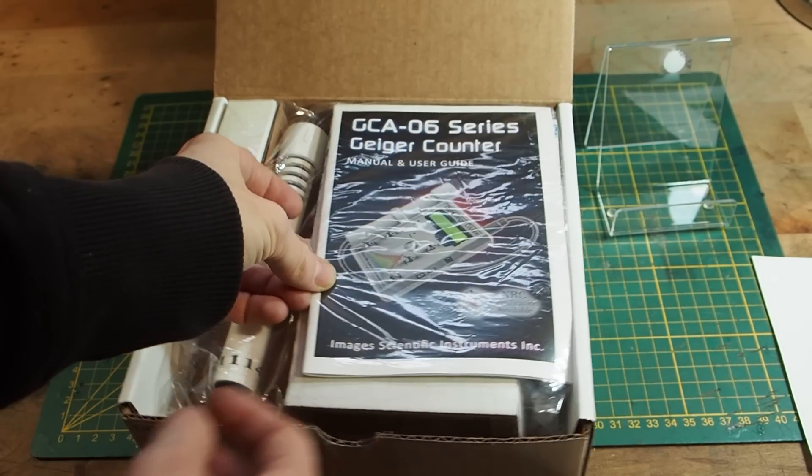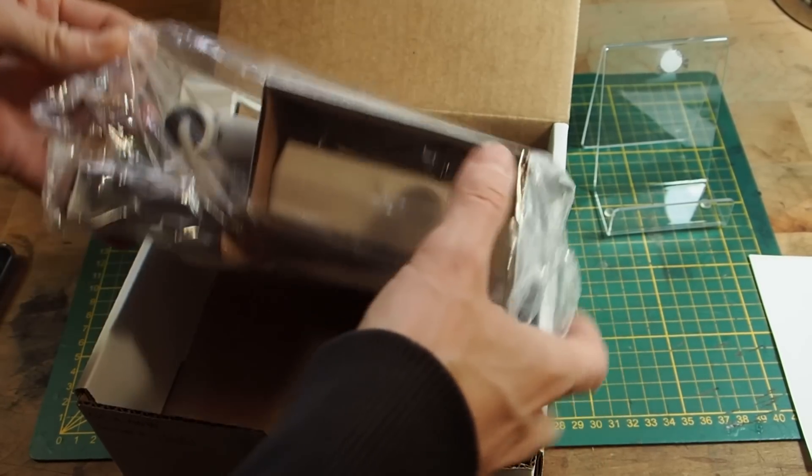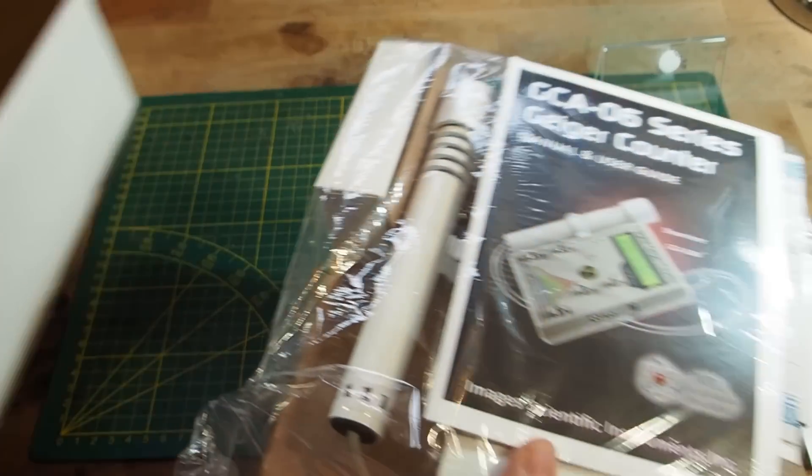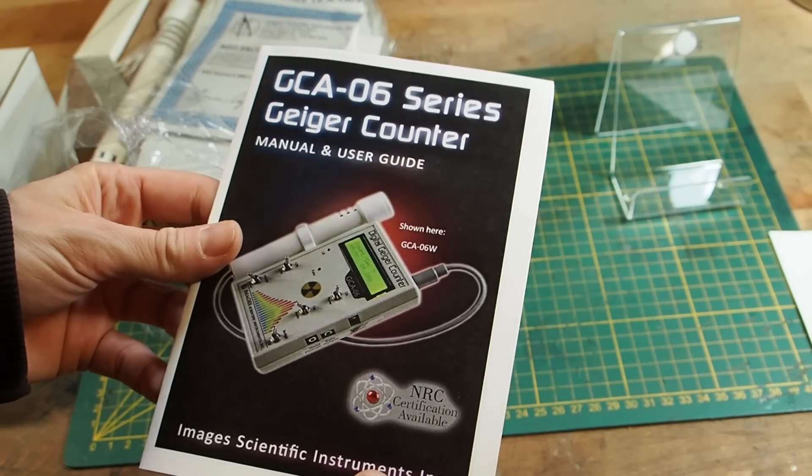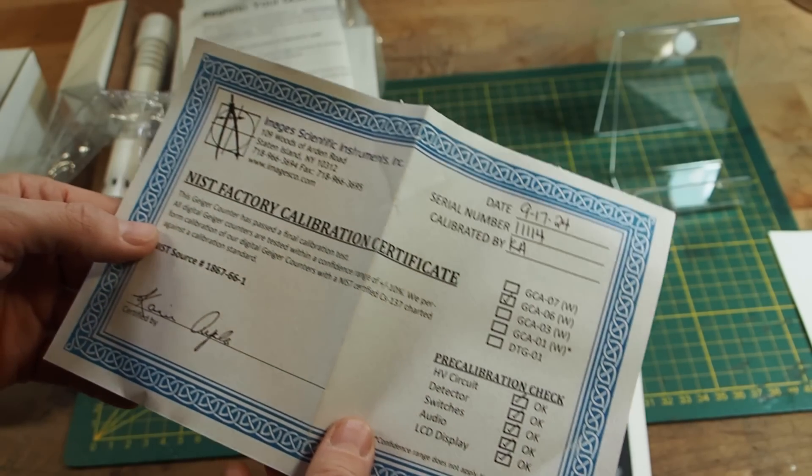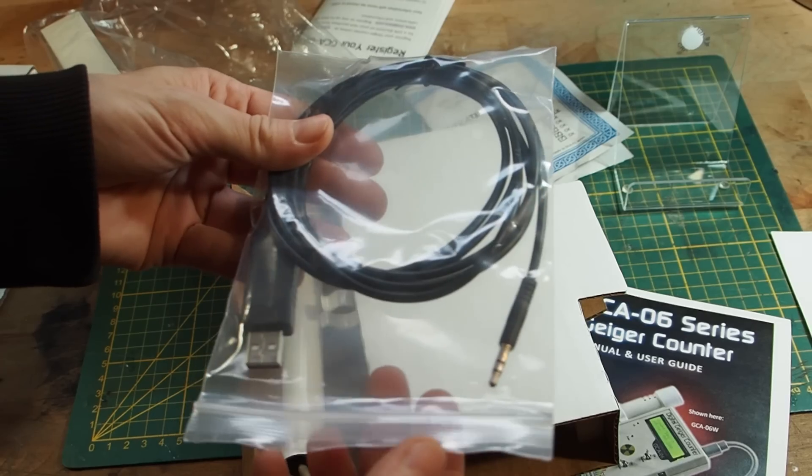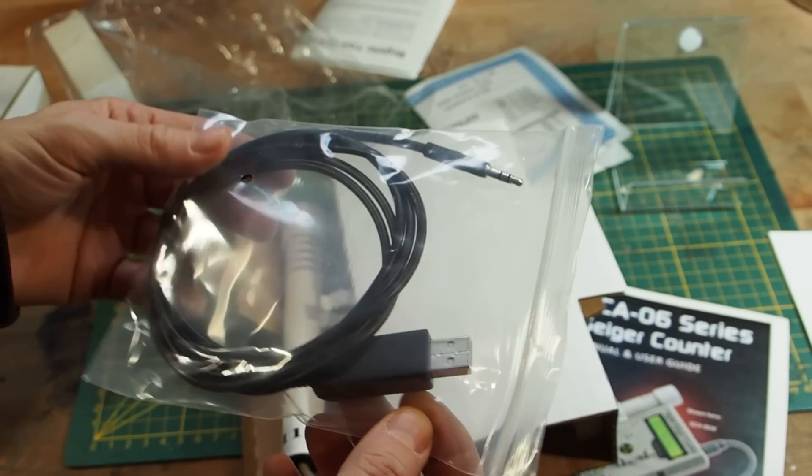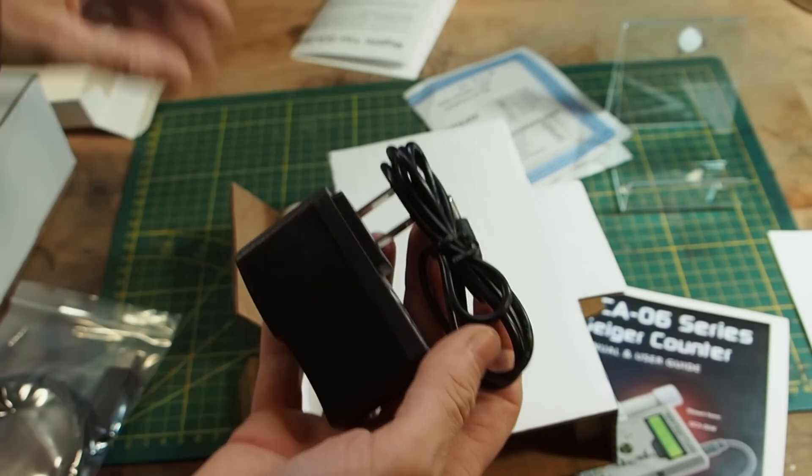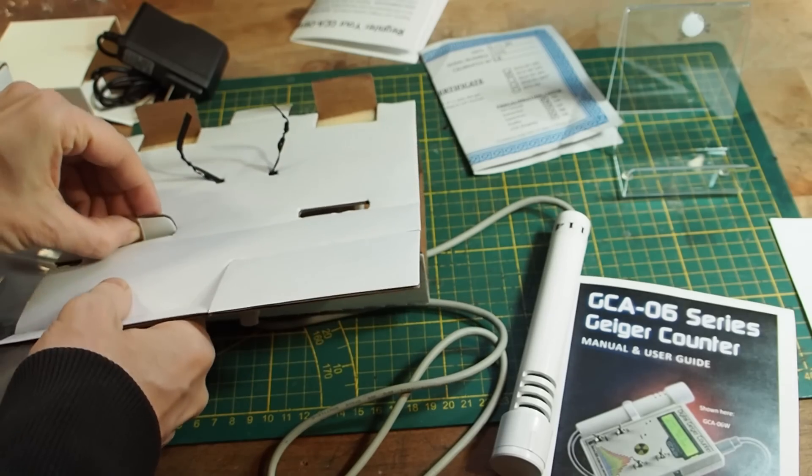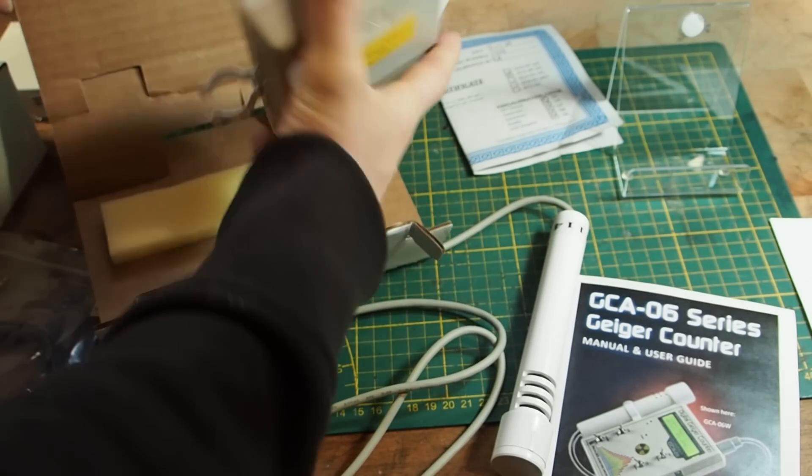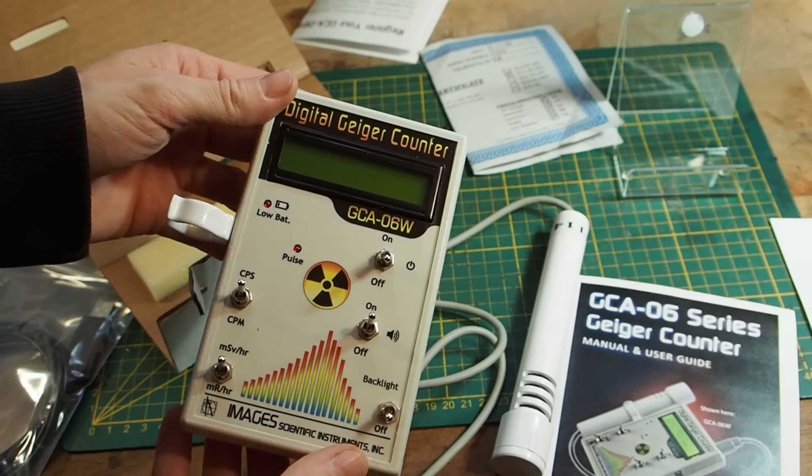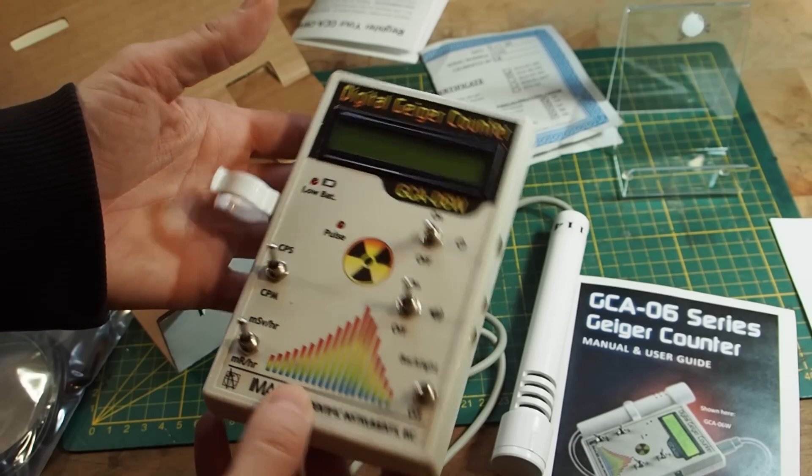Alright so here we go. This is my new Geiger counter. Okay here we got a user manual, here we have a calibration certificate. Then this is a data cable which can connect to your computer. This is a power cable and that's the Geiger counter. Really awesome.